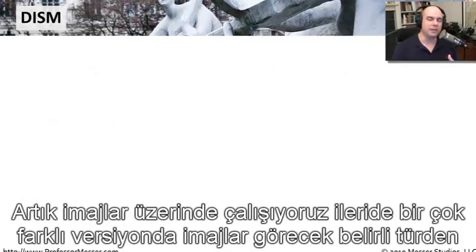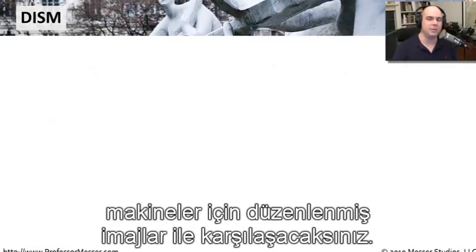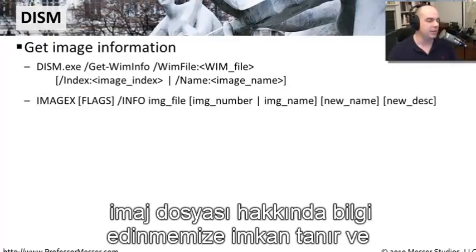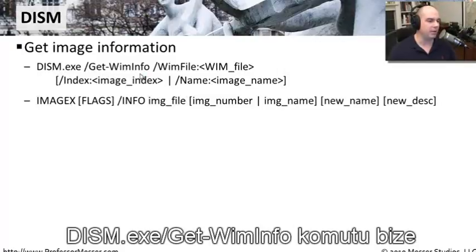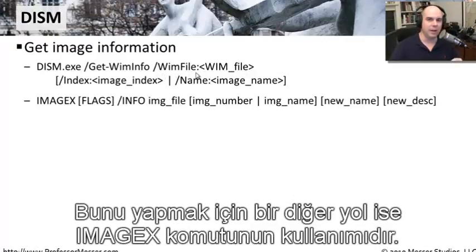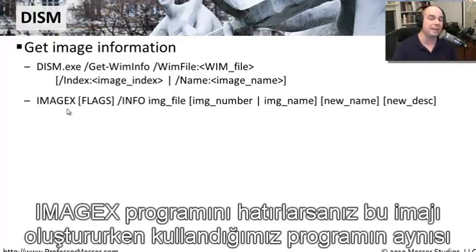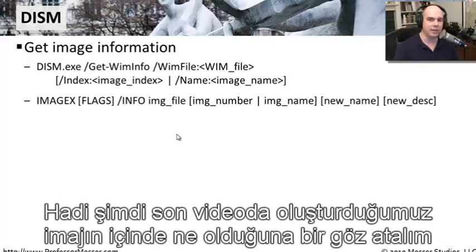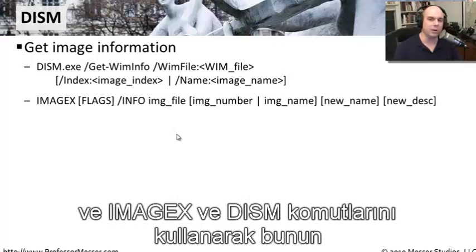When you start working with images, you're going to find that you collect a lot of different versions — images designed for certain kinds of machines. So a very useful DISM command is one that allows us to get information about an image file. The DISM command slash get-wiminfo is going to allow us to see what's in a WIM file that we specify with the slash WIM file option. Another way to do this is using the ImageX command, which is the same program we used to create that image, using a slash info command to see what's in that image file. Let's look at the image file we created in our last video using both commands.